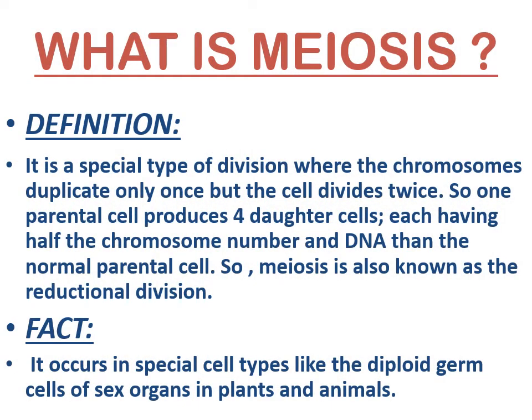Meiosis is a special type of division in which the chromosome duplicates only once but the cell divides twice. One parental cell produces four daughter cells, each having half the chromosome number and DNA amount than the normal parent cell. Meiosis is also called the reductional division and it is found in special types of cells at specific periods.